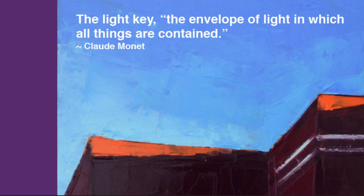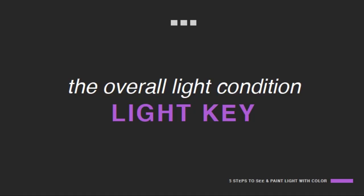The light key is the envelope of light in which all things are contained. That concept came from Monet — he was the first to really coin the phrase 'the light key' or 'the light envelope.' So the overall light condition is what we mean by the light key. It is the container in which we have the variations that create the sense of that lighting situation.